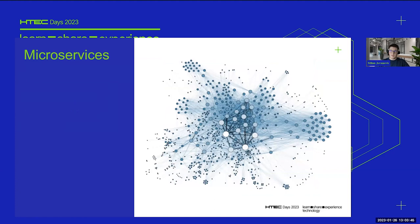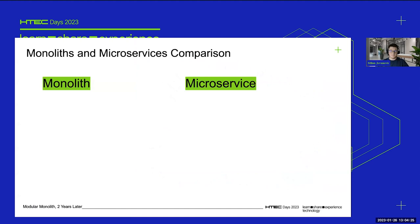On the other end of the spectrum we have the microservices architecture. You can see on this image a crazy set of microservices — if you're working in this kind of system, I feel sorry for all the problems you're probably running into. Microservices consist of many services that form one large system. These days it's considered cutting edge and everyone wants to be working in microservices. In theory they are infinitely scalable — you can take a service and scale it vertically or horizontally — but in practice it's a little more challenging than that.